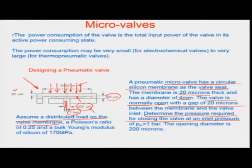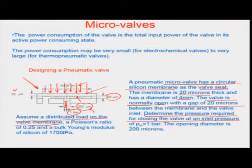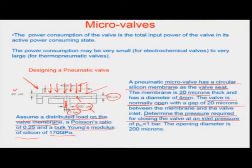We cannot assume a point load here — it is as if a cylinder is giving air pressure, so it is a well-distributed load on the whole membrane, or what you call the valve seat. We have a Poisson's ratio of about 0.25 and a bulk modulus of 170 GPa for silicon material through which this valve has been constructed.